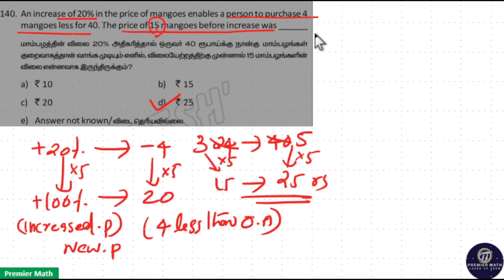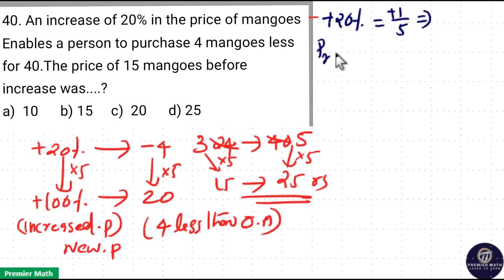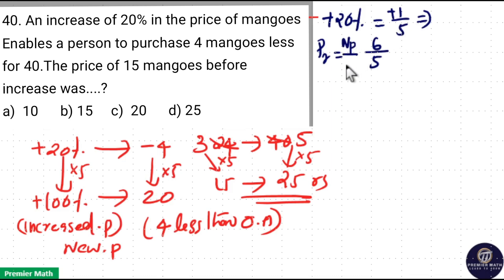You can also do this question using the ratio method. Here 20% is the increment, which means plus 1/5 is the fraction. So the price ratio: if initially 5 parts was the cost, then it is increased by 1 part, meaning 5 plus 1 = 6 parts is the final cost. So new price divided by old price equals 6 by 5.